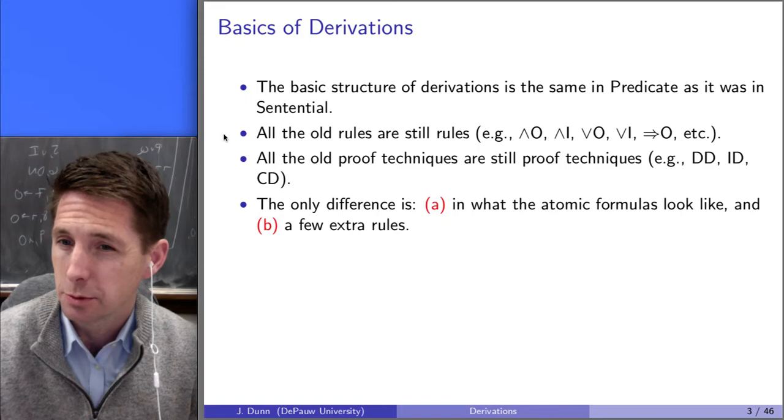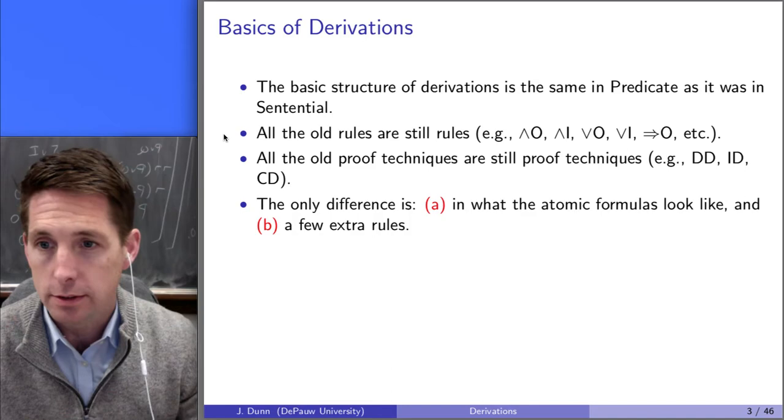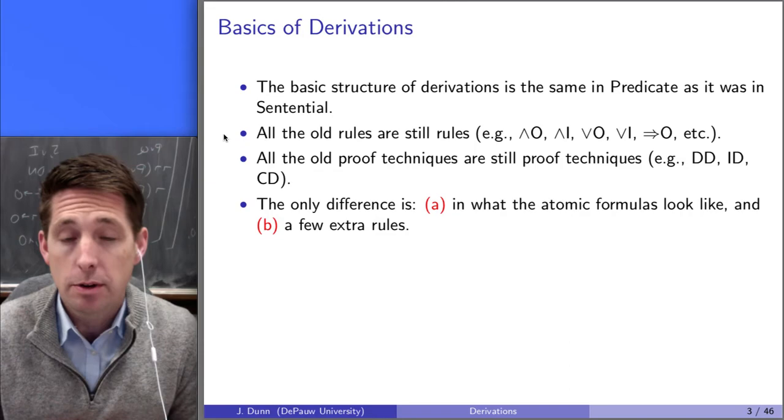There are two important differences. First, which is really just a trivial difference, the atomic formulas are going to look different. Instead of having capital P and capital Q, we're going to have predicates and constants, or predicates and variables and quantifiers. So things are going to look a little different, but that doesn't really change much.